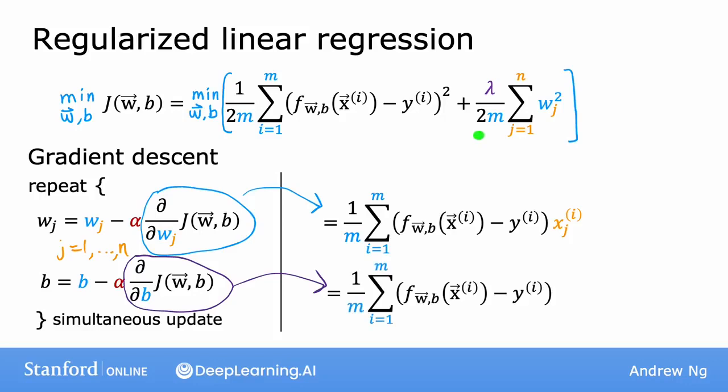Now that we've added this additional regularization term, the only thing that changes is that the expression for the derivative with respect to w_j ends up with one additional term: plus lambda over m times w_j. And in particular, for the new definition of the cost function j, these two expressions over here are the new derivatives of j with respect to w_j and the derivative of j with respect to b.